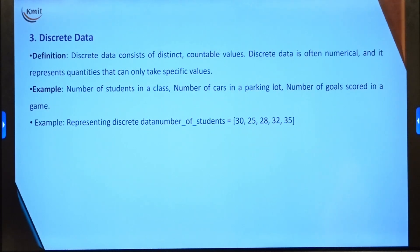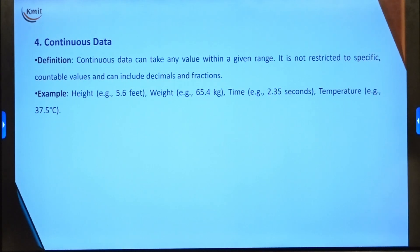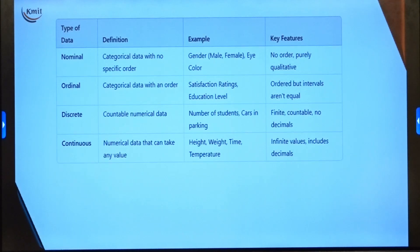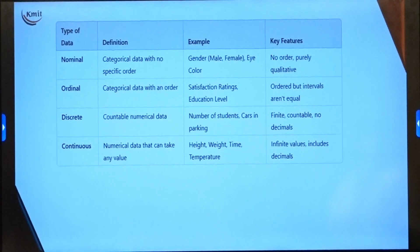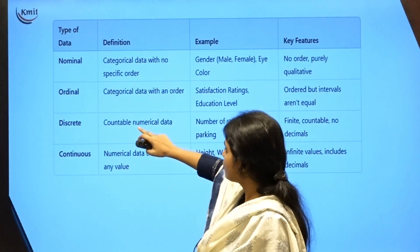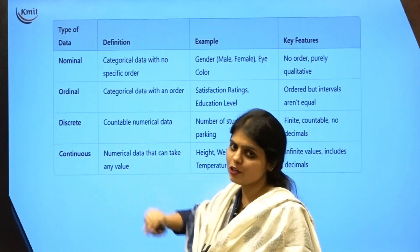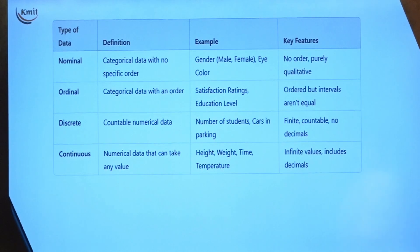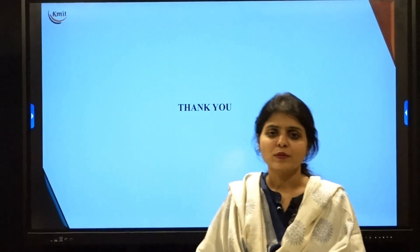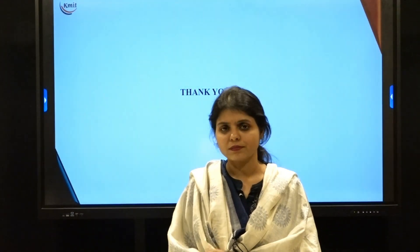Discrete data has distinct or countable values such as the number of students in a class or the number of employees in an organization. Continuous data can take any value within a range — height, weight, or temperature at different periods of time. In summary: ordinal is categorical data with ordering; nominal is categorical data with no ordering; discrete is countable numerical data; and continuous is numerical data that can take any value.